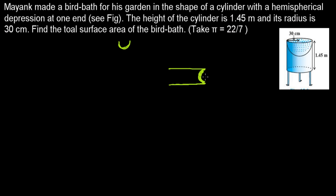So now we need to find out the total surface area of the figure. What we have to do first, we need to find out the curved surface area of this, and then the curved surface area of this hemisphere. So all together this will be the complete surface area of our bird bath.